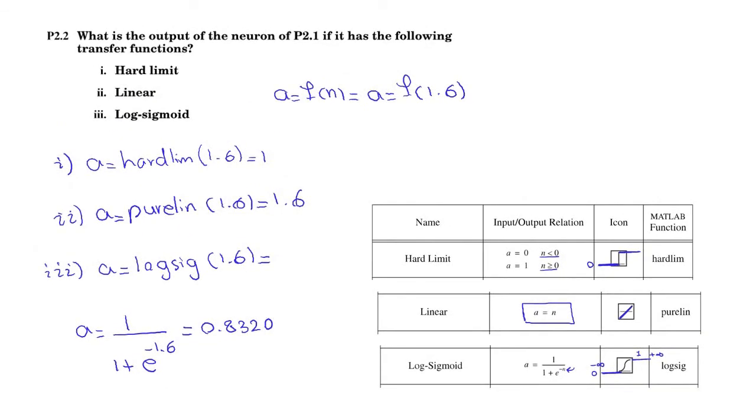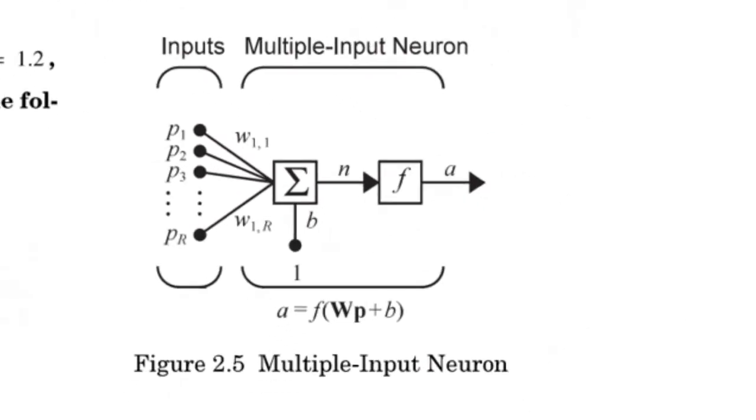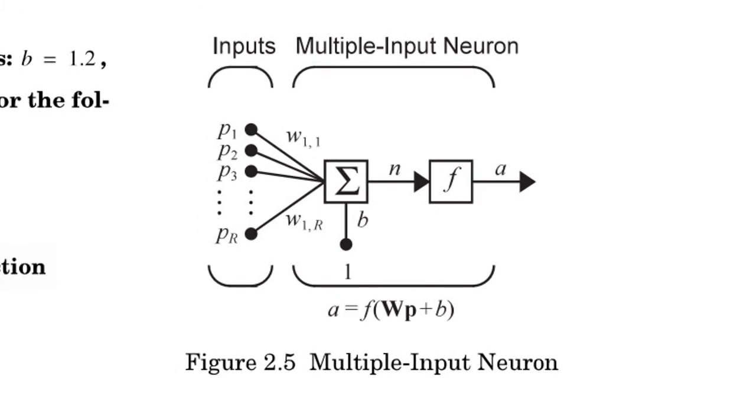So up to now, we had only one input, one output. For the next question, we will have multiple input and one output network. So you can see we have P1 to PR and we have A. And the function is this one.